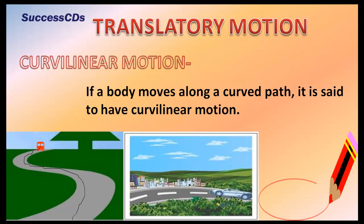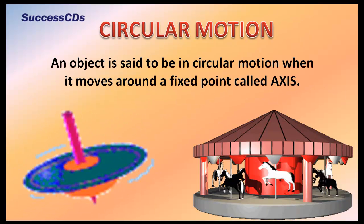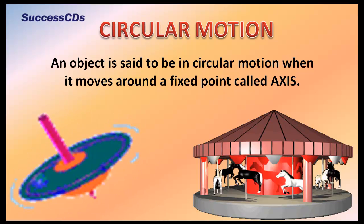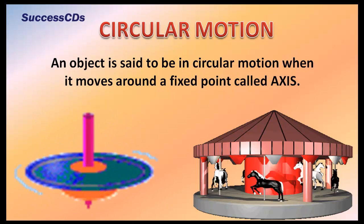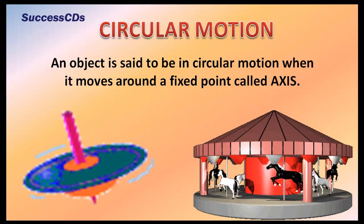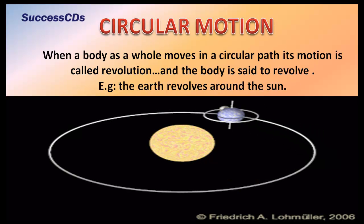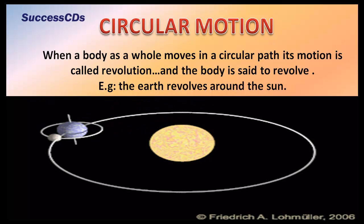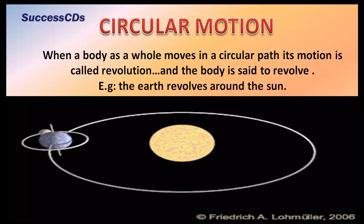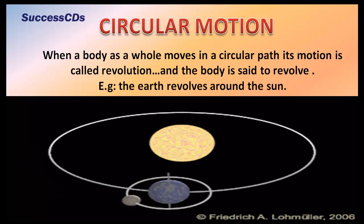Motion of a pencil drawing a circle is also curvilinear. An object is said to be in circular motion when it moves around a fixed point called an axis — for example, a spinning top and a merry-go-round. When a body as a whole moves in a circular path, its motion is called revolution. Example: our own Earth revolves around the Sun.